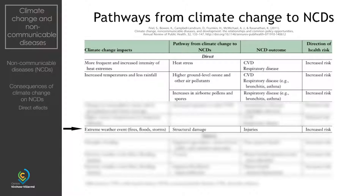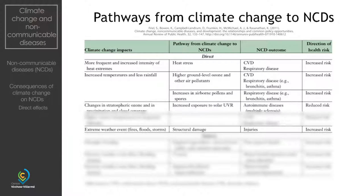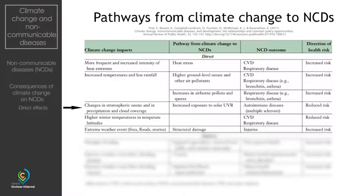Extreme weather events have caused damage to infrastructure and homes, resulting in greater injuries. But climate change exposures are not all negative. Increased exposure to UV light can reduce autoimmune diseases such as multiple sclerosis, and high winter temperatures in temperate regions can actually reduce the risk of cardiovascular and respiratory disease.